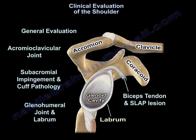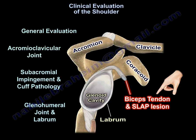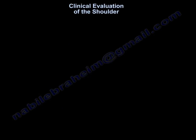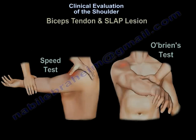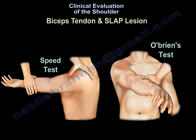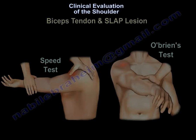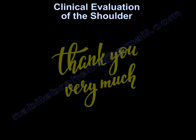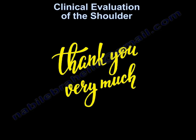For the bicep tendon, we use the Speed test. For the SLAP lesion, we use the O'Brien test. Thank you very much, I hope that was helpful.